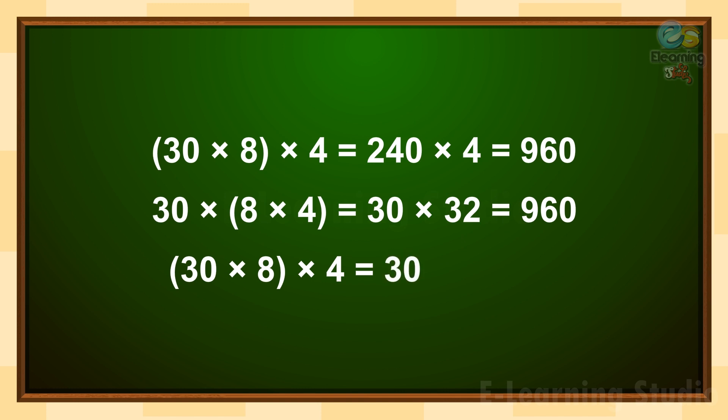So, bracket open 30 multiply 8 bracket close, multiply 4, is equal to 30 multiply bracket open 8 multiply 4 bracket close. Both give us 960 as a result.